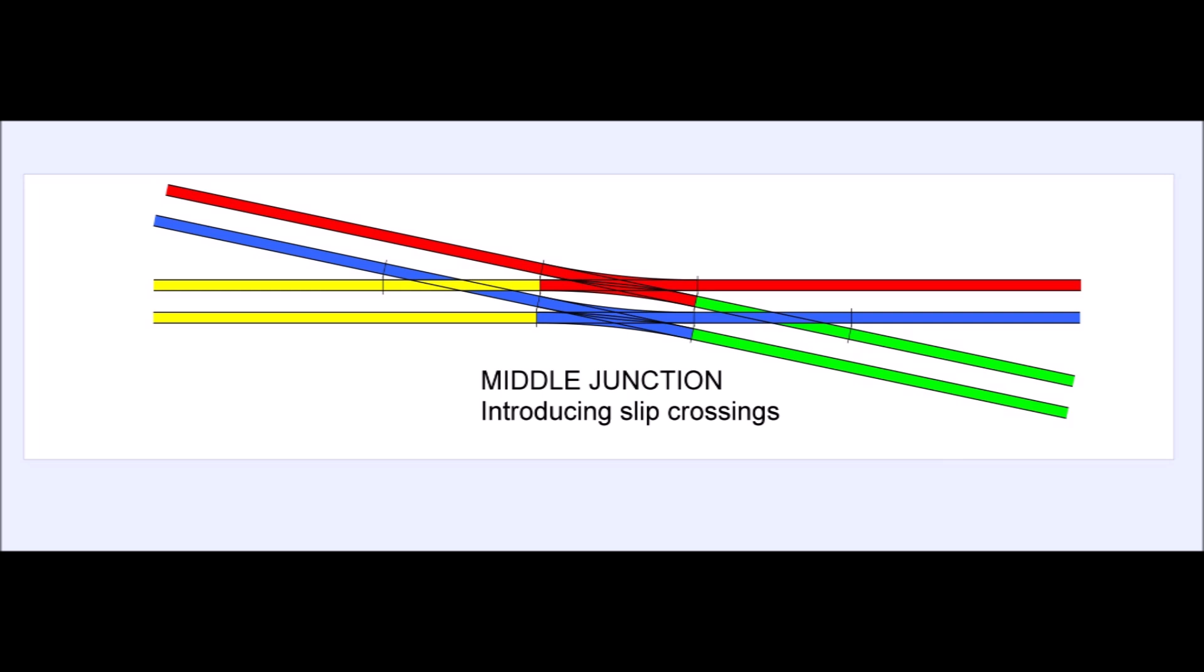then in order to get from Trinity Square storage on the yellow to the green Trinity Square tracks or back, I had to get in the way of the main line running. So I had to stop the main line running or change the points quickly, rush the trains through the crossings and then change the points back all before the main line arrived. That didn't sound like a very good solution.